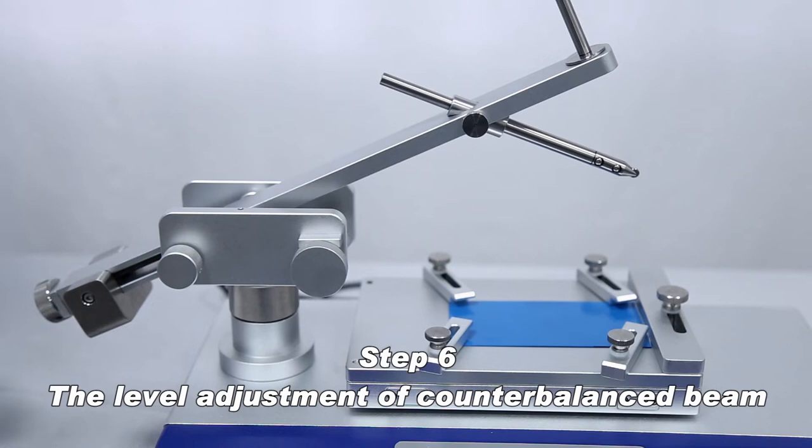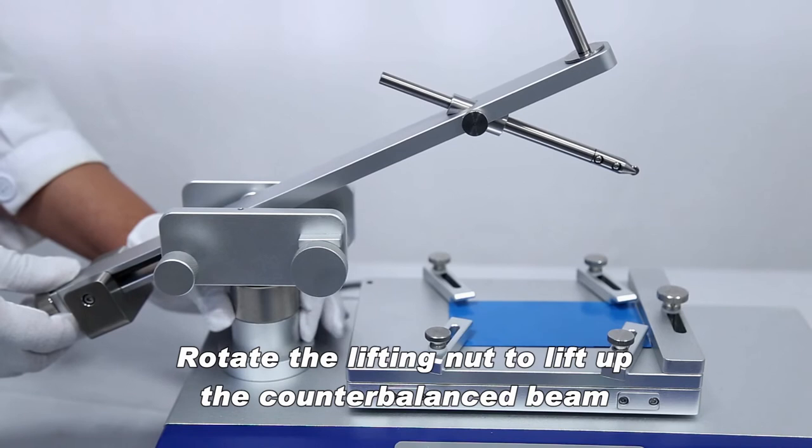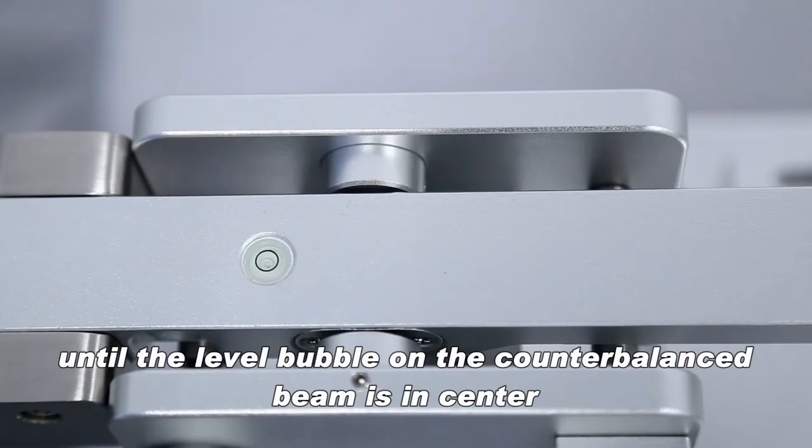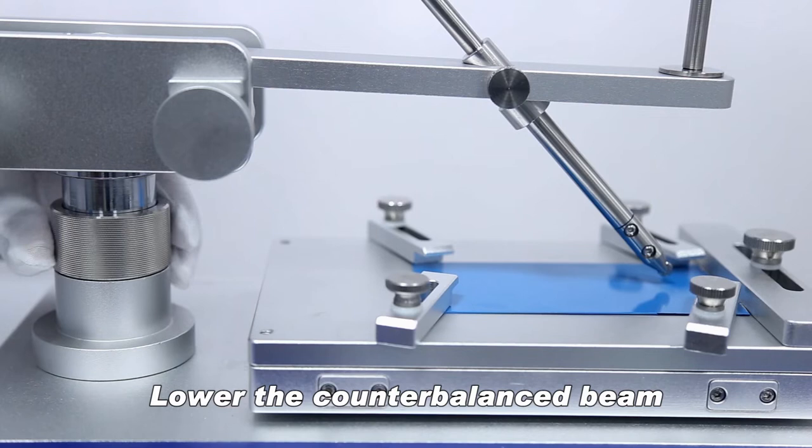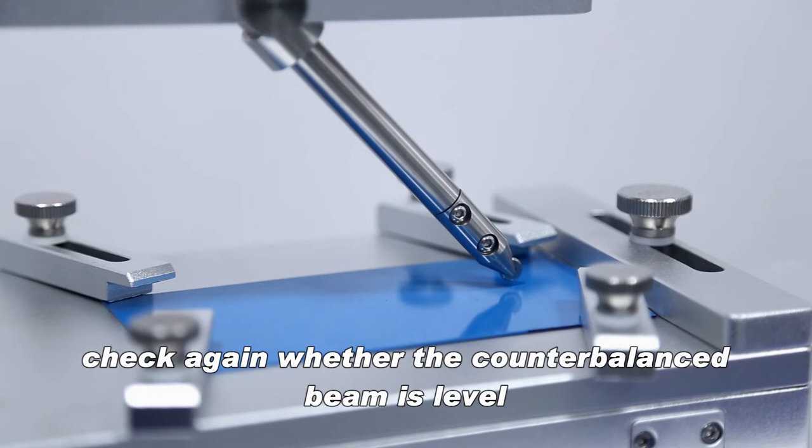The level adjustment of counterbalance beam: Loosen the limited knob and lower the counterbalance beam. Rotate the lifting nut to lift up the counterbalance beam until the level bubble on the counterbalance beam is in center. Lower the counterbalance beam until the tip of the stylus is just touching the surface of the test panel. Check again whether the counterbalance beam is level.